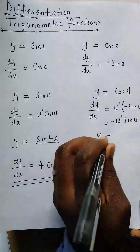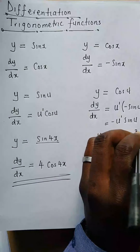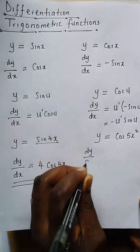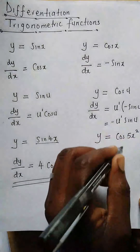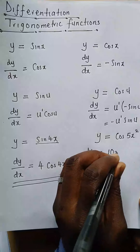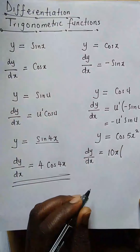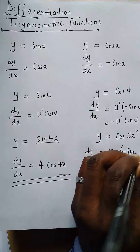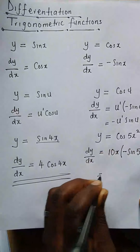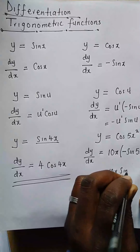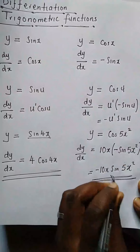Let's have an example: y = cos(5x²). What is dy/dx? The u function is 5x². Finding its derivative: we drop the 2, giving 2 × 5 = 10, and subtract 1 from the power, leaving 10x. The full derivative is then negative 10x·sin(5x²).